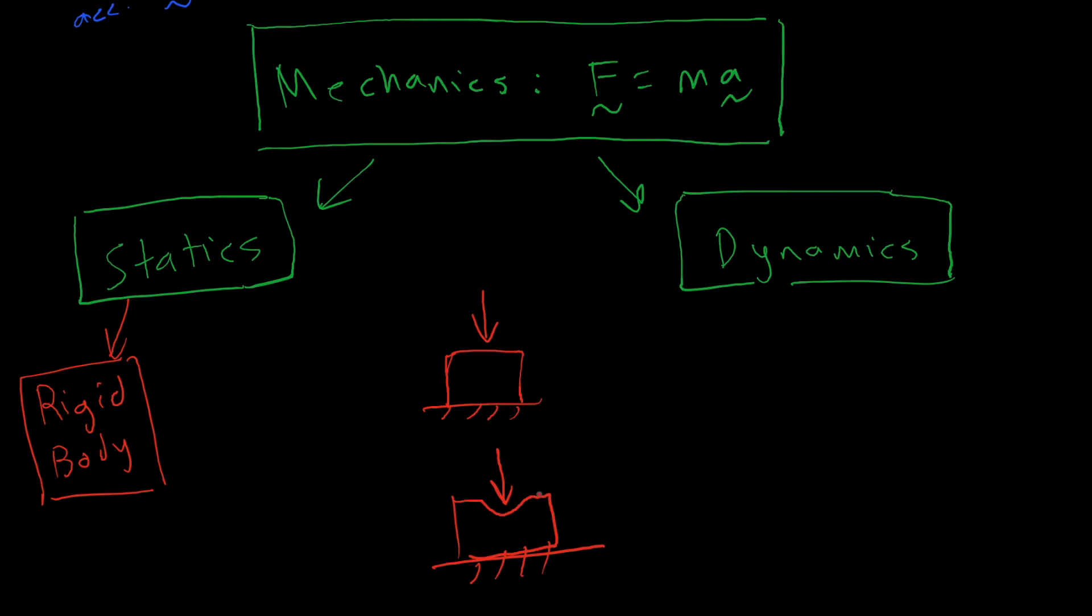In BME 201, we do not consider deformable bodies. Let me put a big X on that. We do not consider this because it's a little too complicated. For now we need to have a good understanding of statics. After you take this course, if you want to study deformable bodies, then you'd have to take this class called ME226. But for now, we do not care about deformable bodies. We assume that every object that we look at is a rigid body.